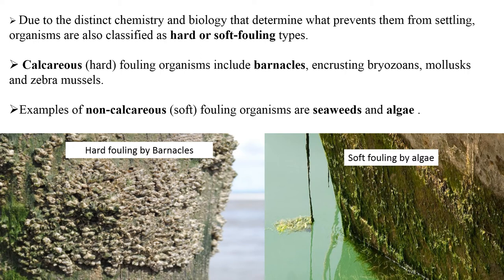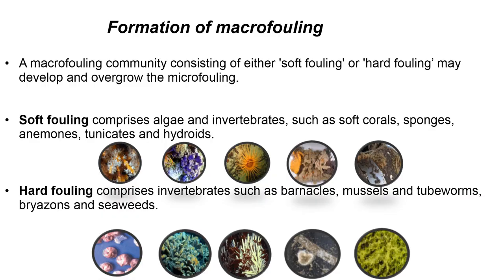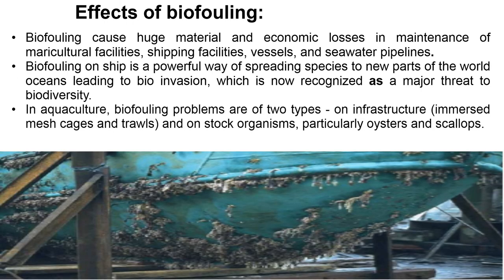Examples of non-calcareous fouling organisms are seaweeds and algae. A macro fouling community consists of either soft fouling or hard fouling, and may develop or overgrow the micro fouling. Soft fouling comprises algae and invertebrates such as soft corals, sponges, anemones, tunicates, and hydroids. Hard fouling comprises invertebrates such as barnacles, mussels, tube worms, bryozoans, and seaweeds.